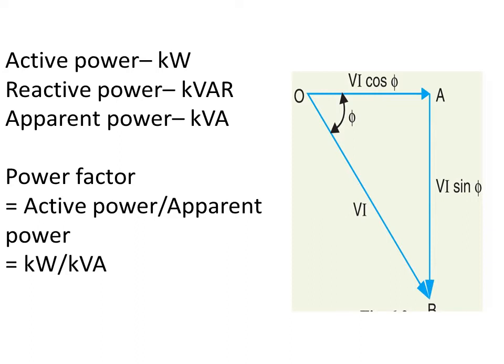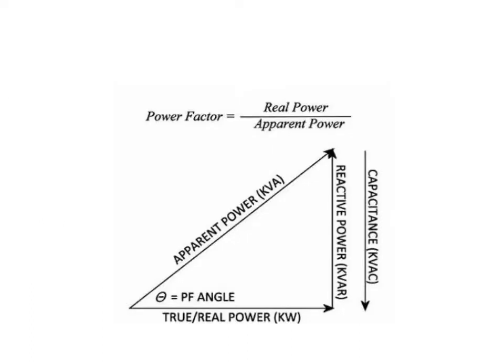Power factor is cos theta, which equals active power divided by apparent power — that is kilowatts divided by kVA. This represents the power triangle. Here theta is the angle between the apparent power and the true power. Cos theta is the power factor. So power factor equals real power divided by apparent power, and on the perpendicular side it is reactive power in kVAR.